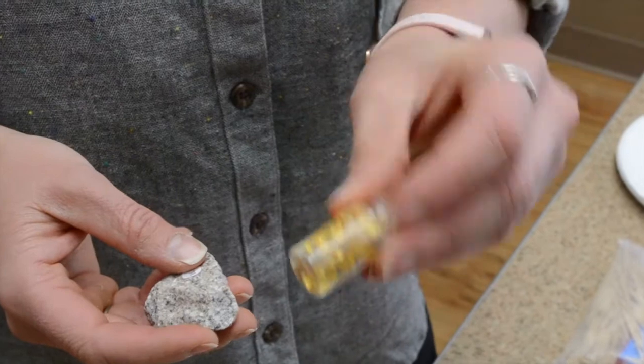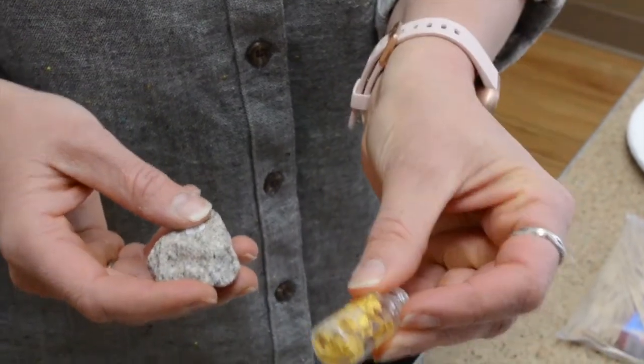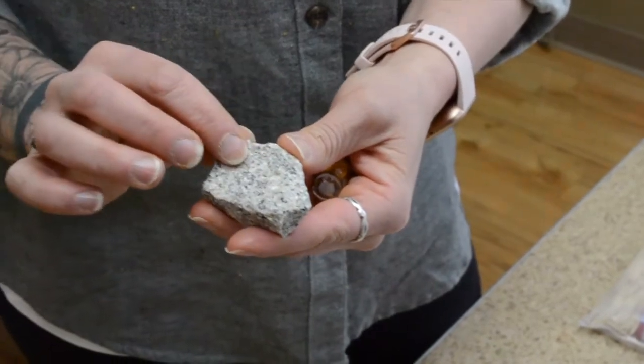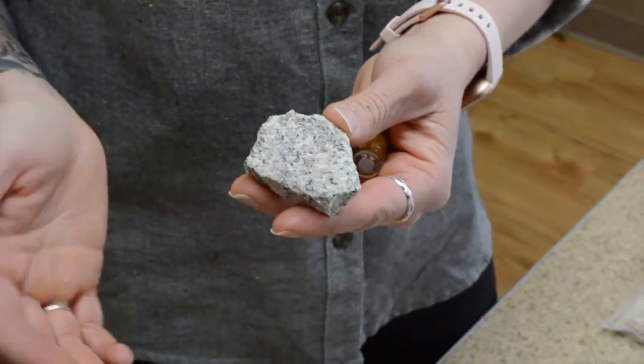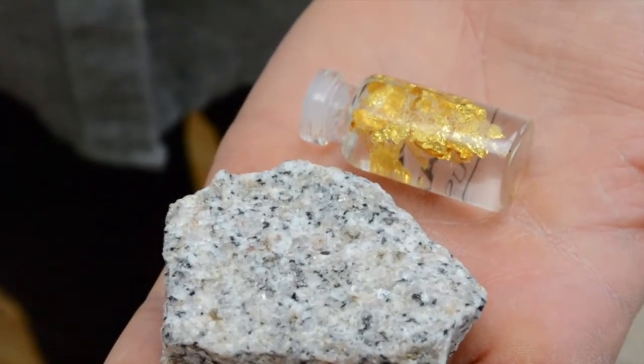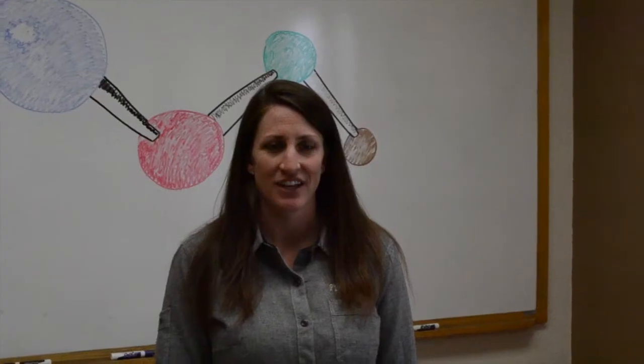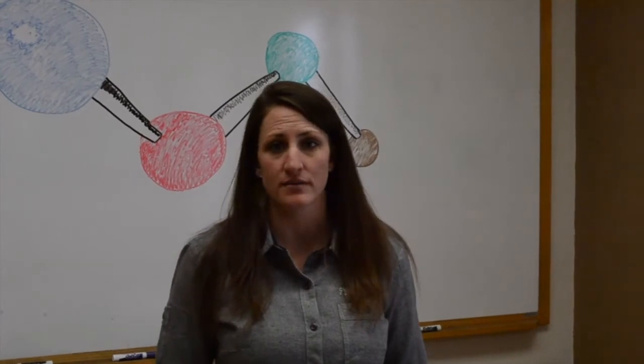For example, gold is a mineral because it's one pure substance, but granite is a rock because it's made up of two or more minerals. So feldspar, mica, and quartz make up granite, gold is a mineral, it's a pure substance.